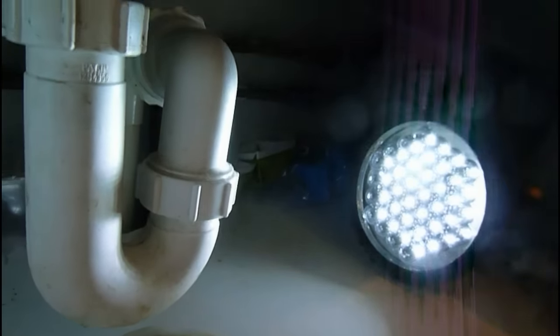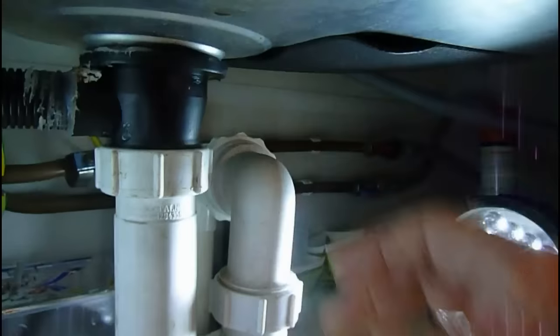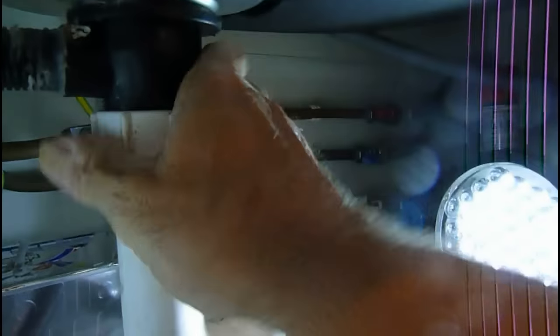A lot of plumbers do go a bit mad and tighten them a bit too far. So, I'm assuming you've cracked it, and it will undo by hand, so just undo the top nut and undo the back one.